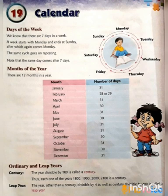We see days of the week and months of the year. Days of the week — we know that there are 7 days in a week. A week starts with Monday and ends at Sunday, after which Monday comes again. The same cycle goes on repeating. Note that the same day comes after 7 days.